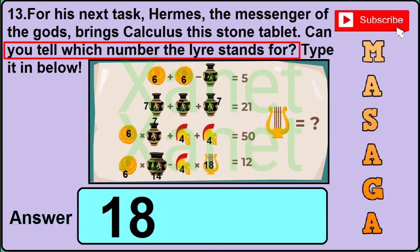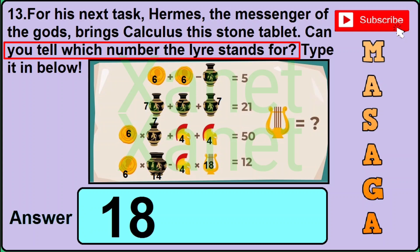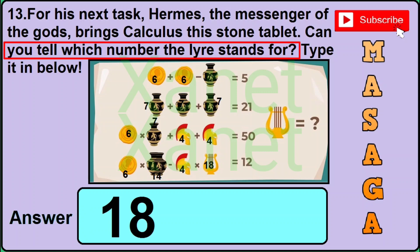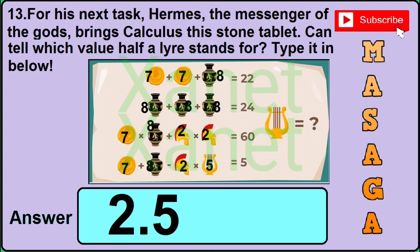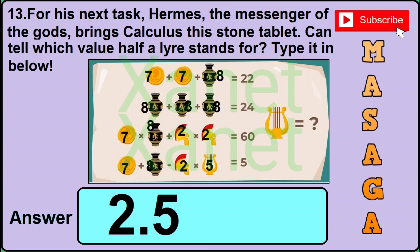Now in version 2 of this question the image is similar to version 1 but the question is different. The second last sentence asks 'can you tell which number the liar stands for?' then the correct answer would be 18. Previously it asked for half the value, now it does not, that's why the correct answer is 18. Now in version 3, it is asked 'can you tell which value half a liar stands for?' and the correct answer will be 2.5.